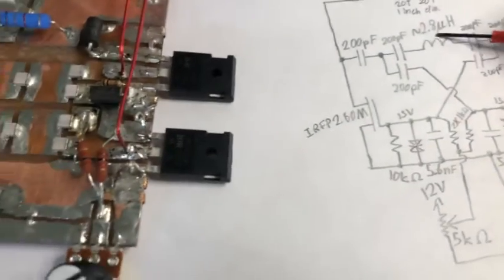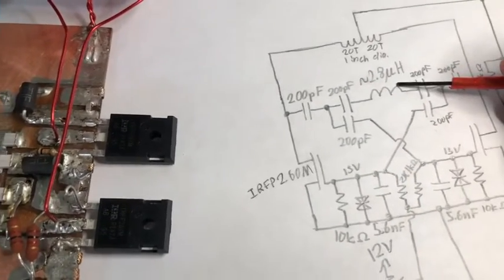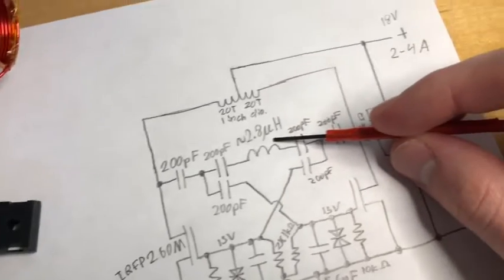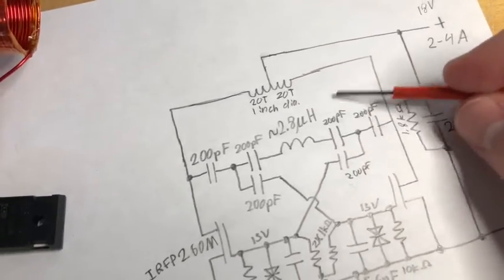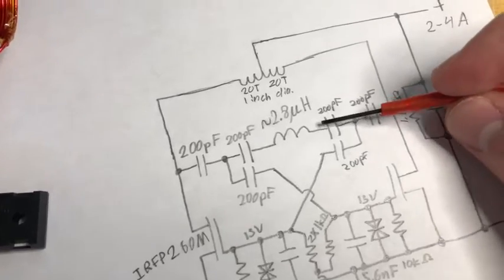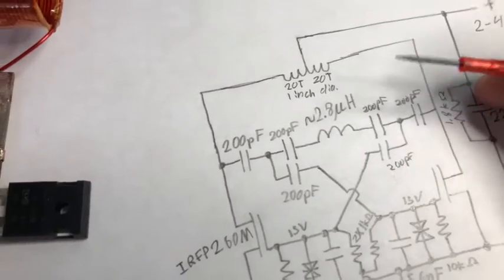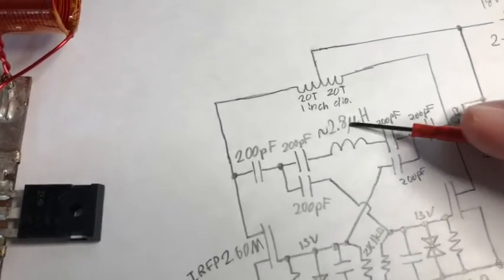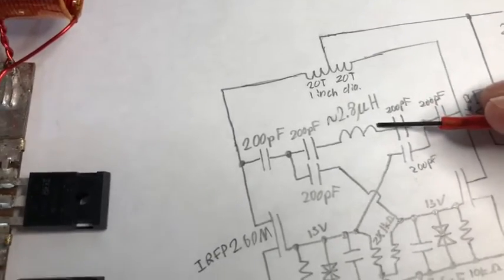The work coil itself, in my experience, it has to be at least around 2.5 microhenries or the circuit will not start oscillating. So I'm using around 2.8 microhenries. Try not to go below 2.5 microhenries. You might be able to get it to work, but in my experience, it wouldn't start oscillating when I had less inductance than that.